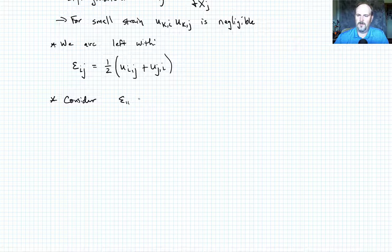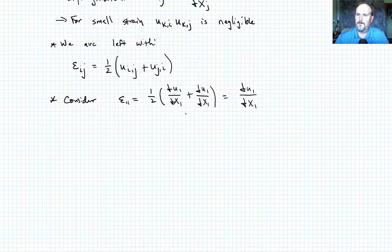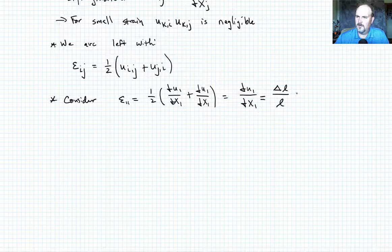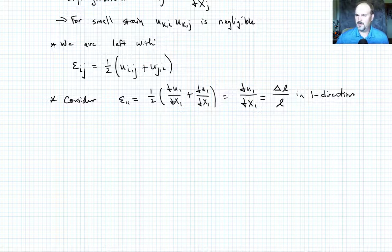Let's consider epsilon 1,1. What does that look like? So that's one half times partial u1 partial x1 plus partial u1 partial x1. So it's just partial u1 with respect to x1. So that should also, remember, that looks like delta L over L in the one direction. So that's the displacement formulation. That's the small strain specialization of that.